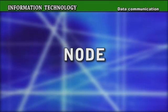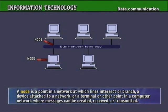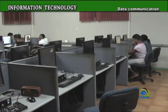A node is a critical element of any computer network. It can be defined as a point in a network at which lines intersect or branch, a device attached to a network, or a terminal or other point in a computer network where messages can be created, received, or transmitted.